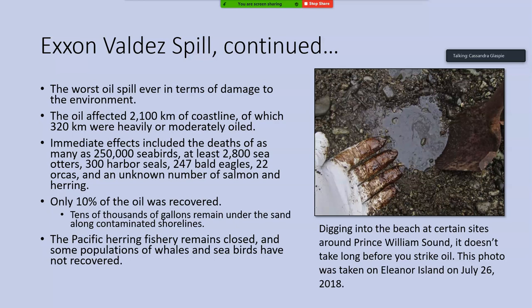There are lasting impacts to the environment. The Pacific herring fishery remains closed and has never opened back up; the Pacific herring population has never recovered. Some populations of whales and seabirds have not recovered and have essentially been on a slow decline toward extinction, including a couple of populations of orcas and several different species of birds. However, some organisms have recovered — most recently, the sea otter population in that area is now considered fully rebuilt to pre-oil-spill standards.